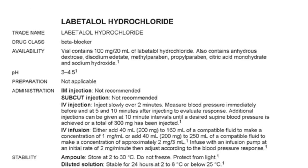I'm now going to explain each of the headings of the monographs. We call each section of information about one drug a monograph. The first heading is 'Name' — this is the Australian approved medicine name. In this case, it's labetalol hydrochloride.